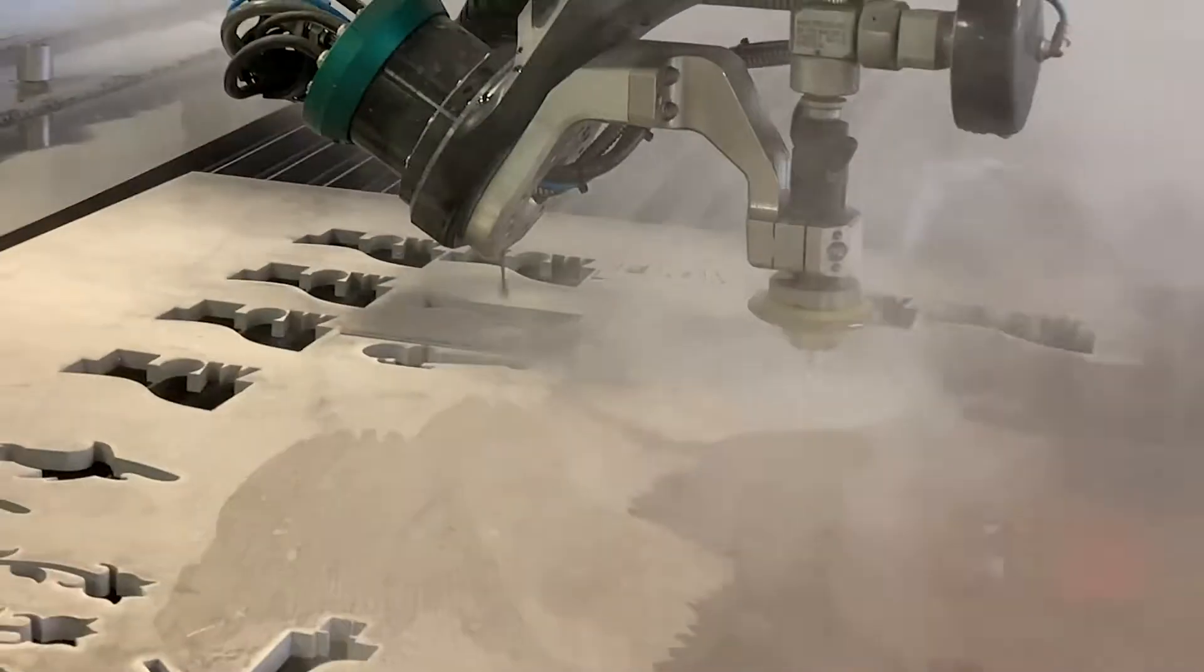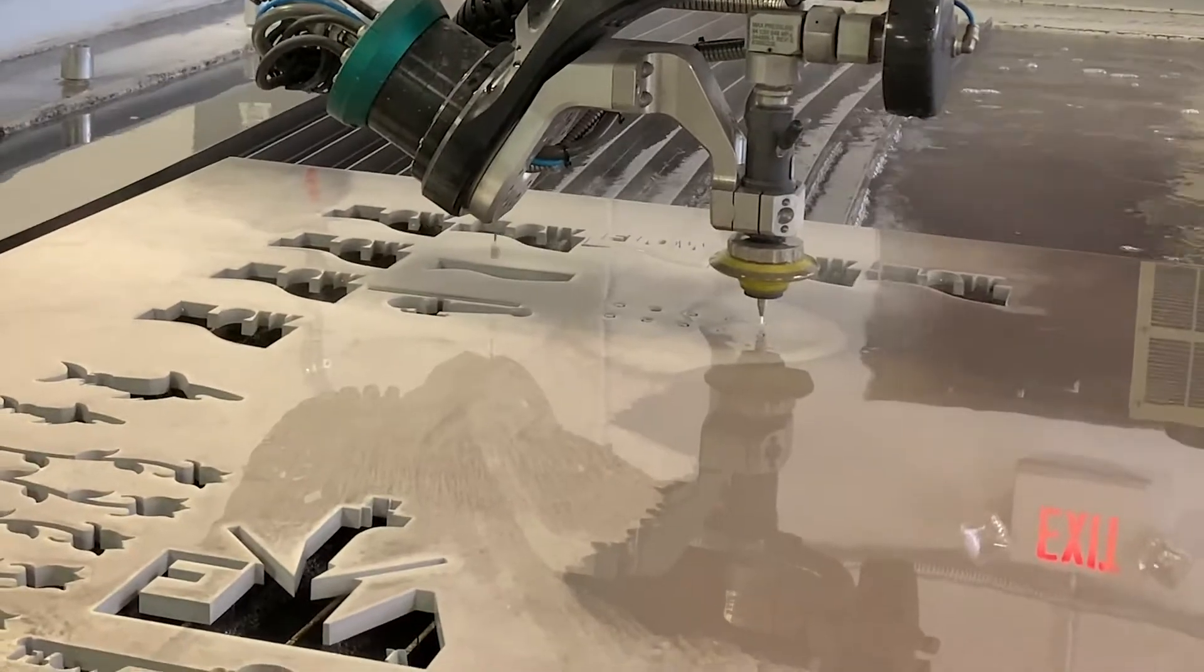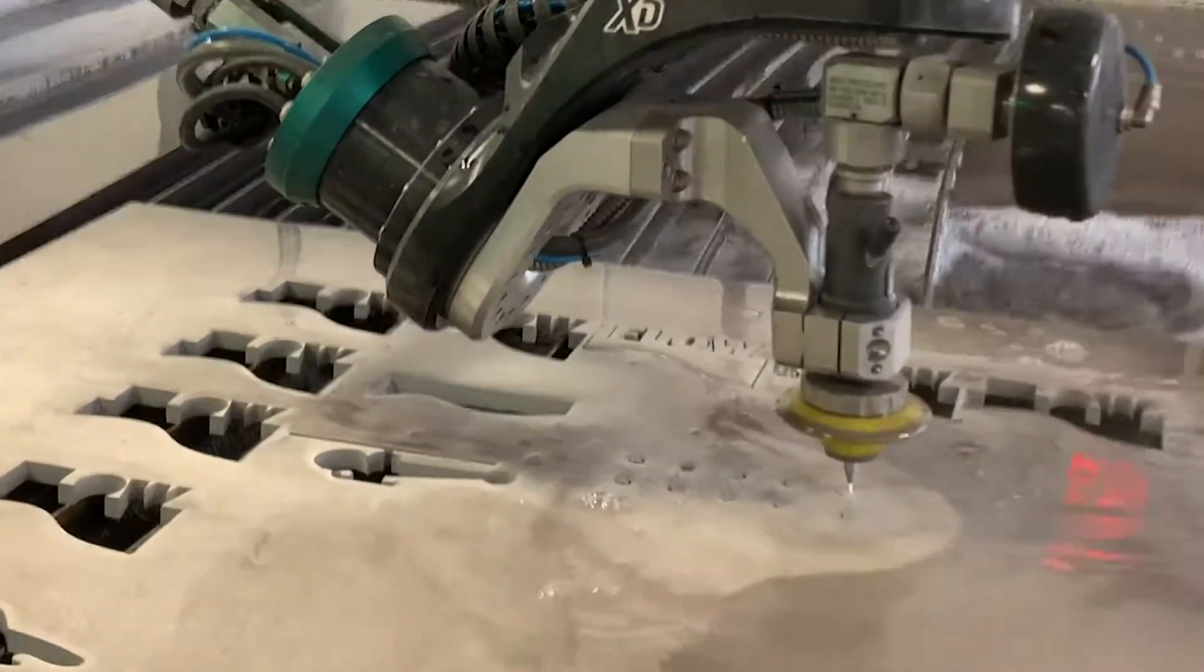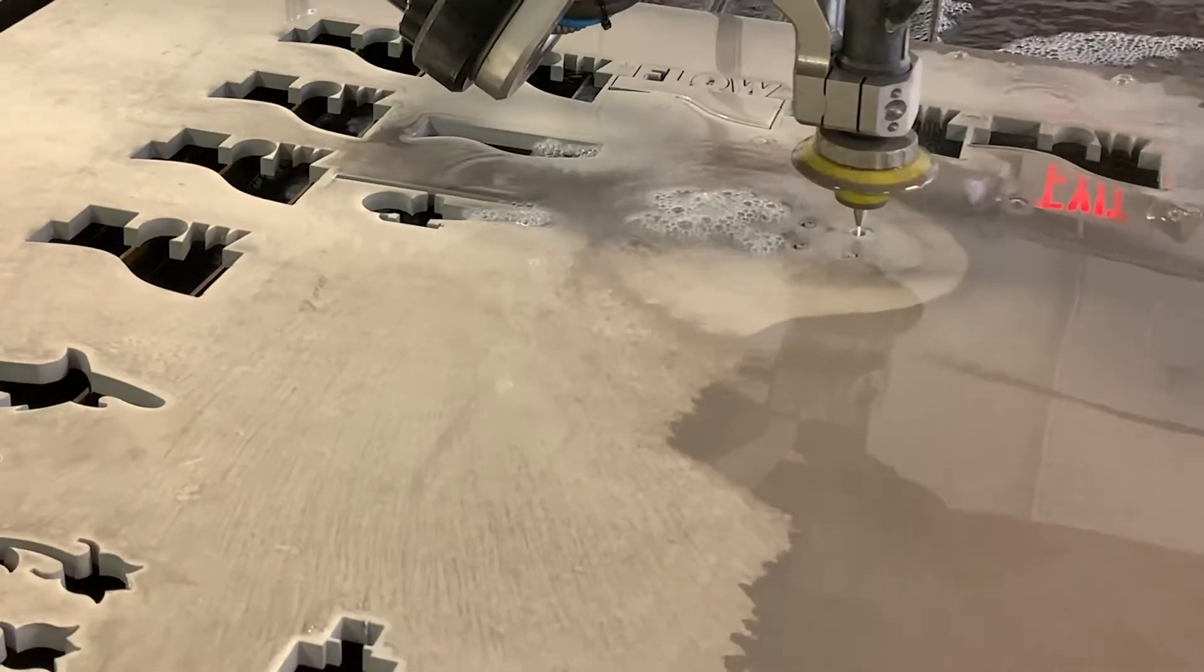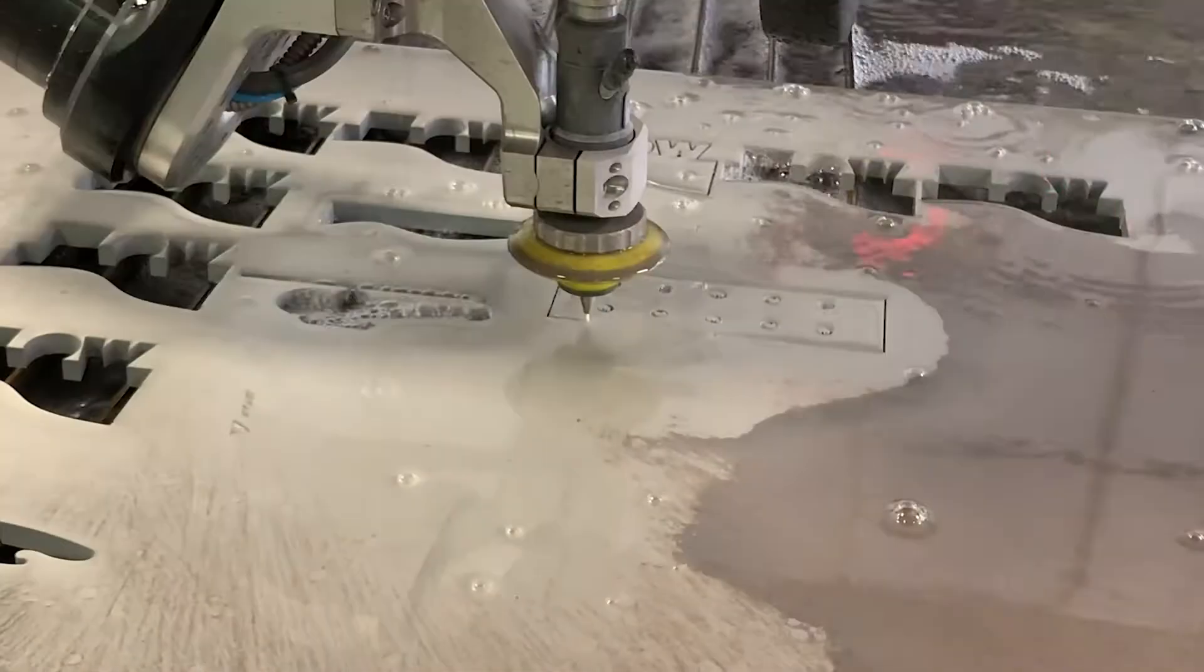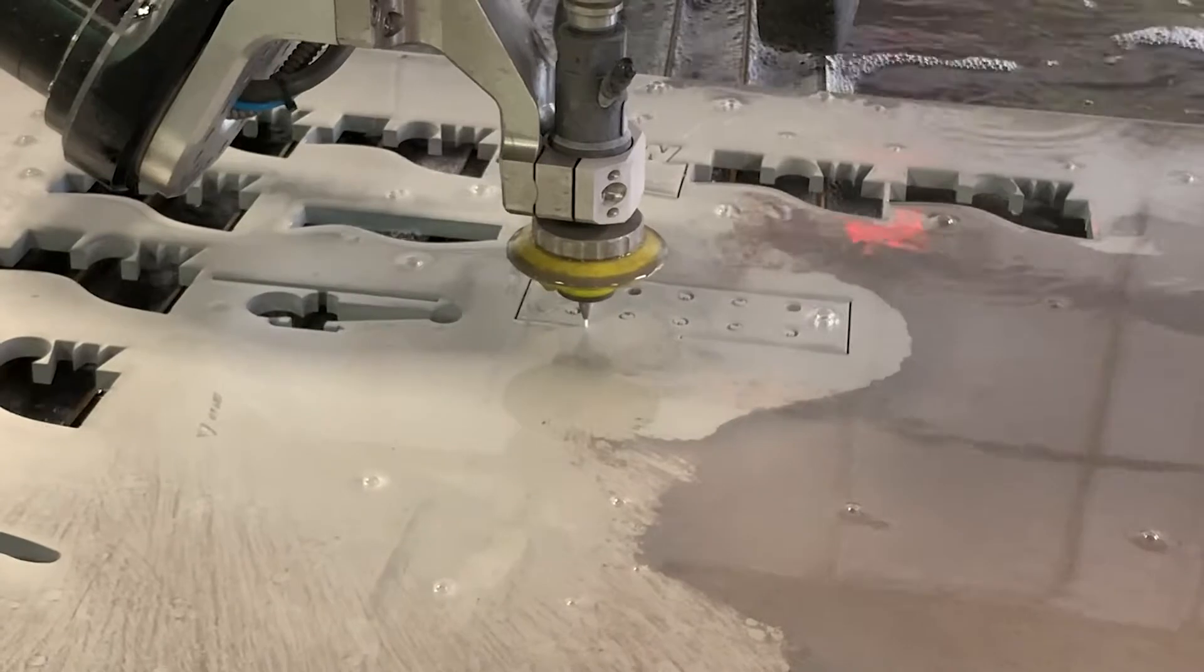Yeah, definitely. So behind us we have our Mach 500 water jet machine and we just cut half inch holes in three-eighths aluminum in order for flex arm to tap those holes for us. And it's a pretty easy process on your guys' side of things.